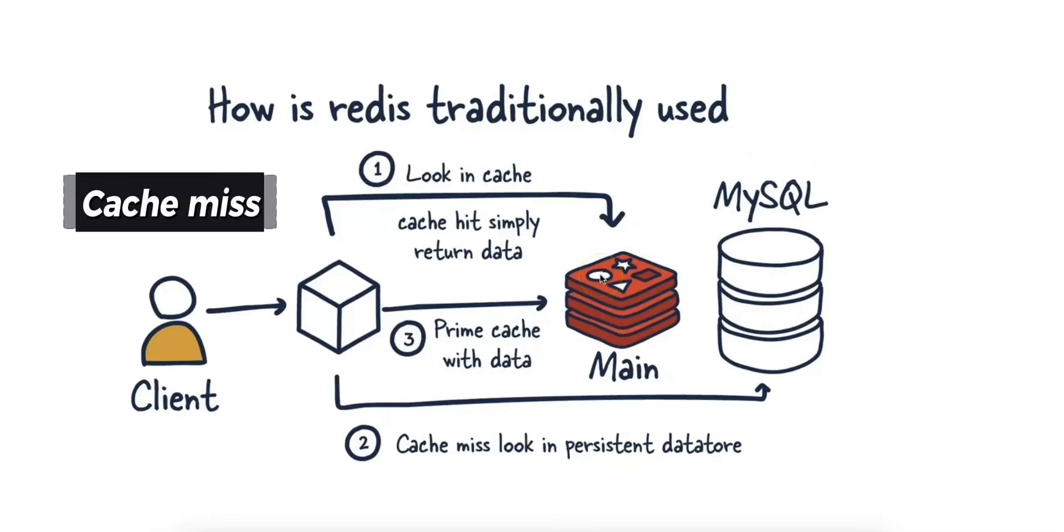The second case is a cache miss. If the data is not in Redis, there is a cache miss, and the system then queries the MySQL database for the data. Once MySQL returns the result, the system stores this data in Redis for future requests, and then returns the result to the client.